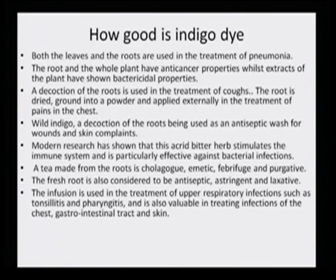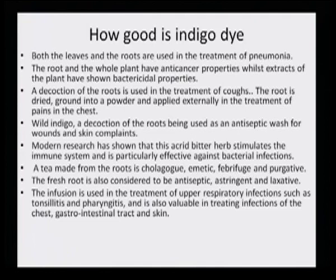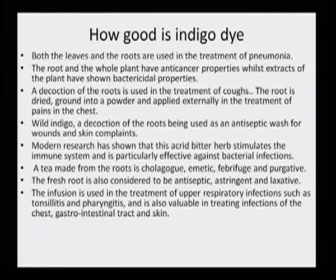Both the leaves and the roots are used in the treatment of pneumonia. The root and the whole plant have anti-cancerous properties, whilst extracts of the plant have shown bactericidal properties. A decoction of the root is used in the treatment of coughs. The root is dried, ground as a powder and applied externally in the treatment of pain in the chest. A decoction of the root is also used as an antiseptic wash for wounds and skin complaints. Modern research has shown that this acrid bitter herb stimulates the immune system and is particularly effective against bacterial infection.